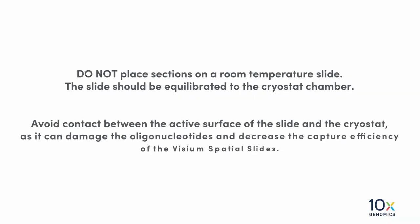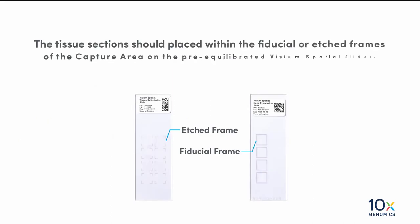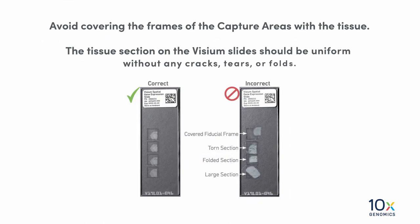Do not place sections on the room temperature slide. The slide should be equilibrated to the cryostat chamber. Avoid contact between the active surface of the slide and the cryostat, as it can damage the oligonucleotides and decrease the capture efficiency of the Visium Spatial Slides. The tissue section should be placed within the fiducial or the edge frames of the capture area on the pre-equilibrated Visium Spatial Slides.